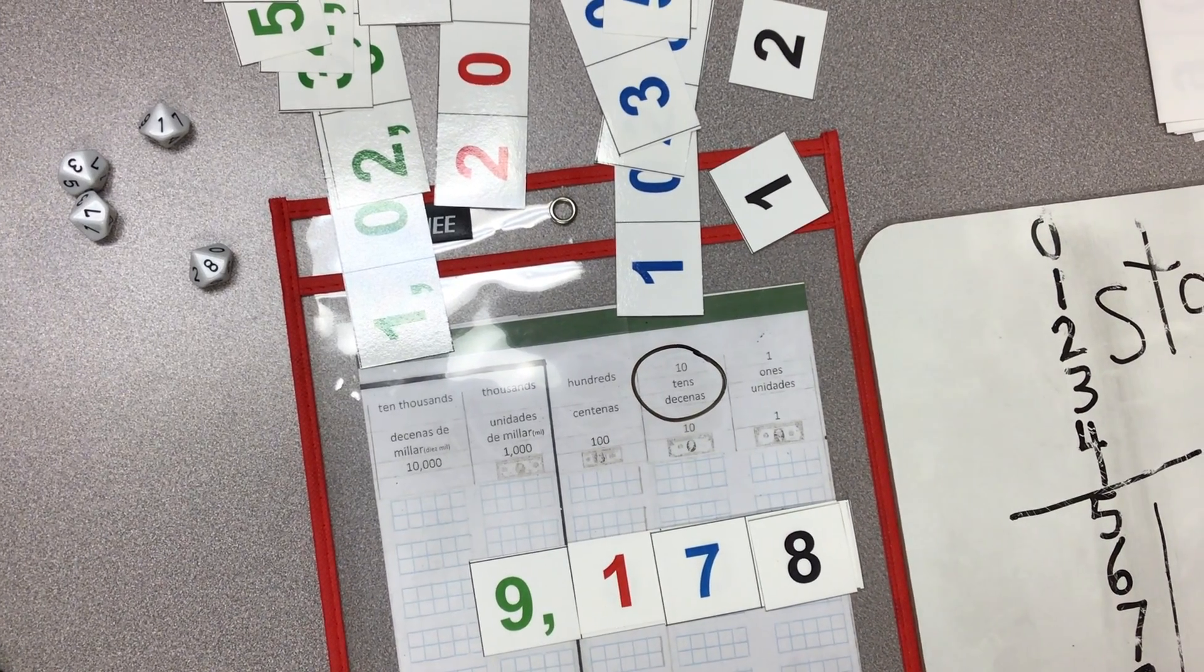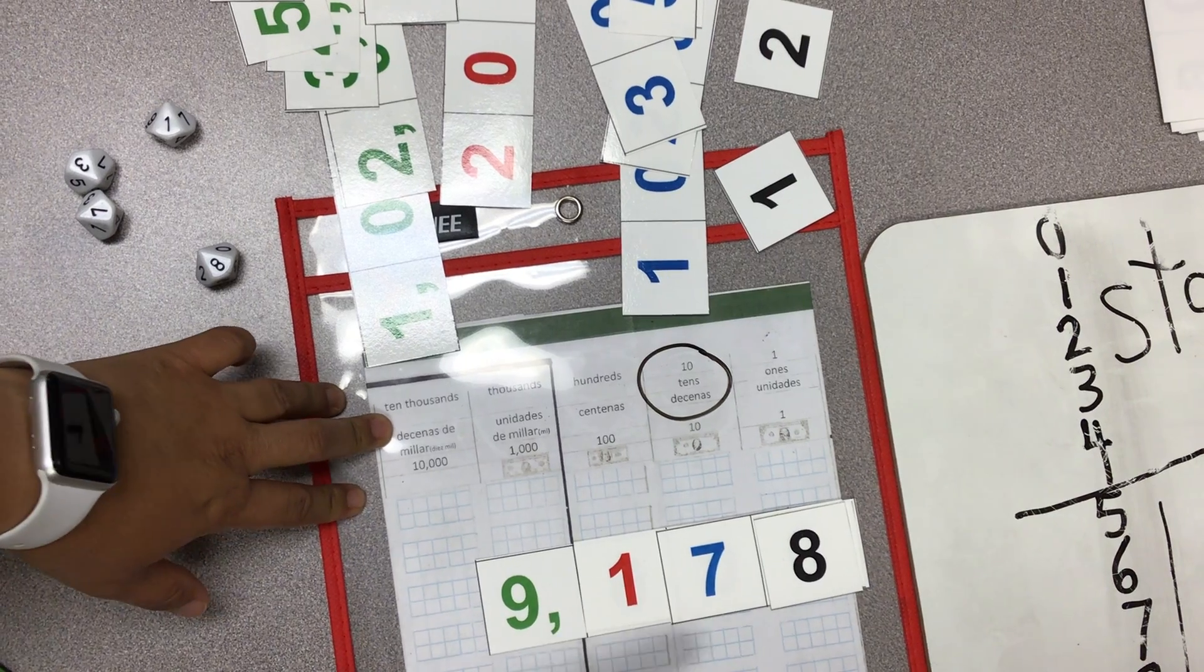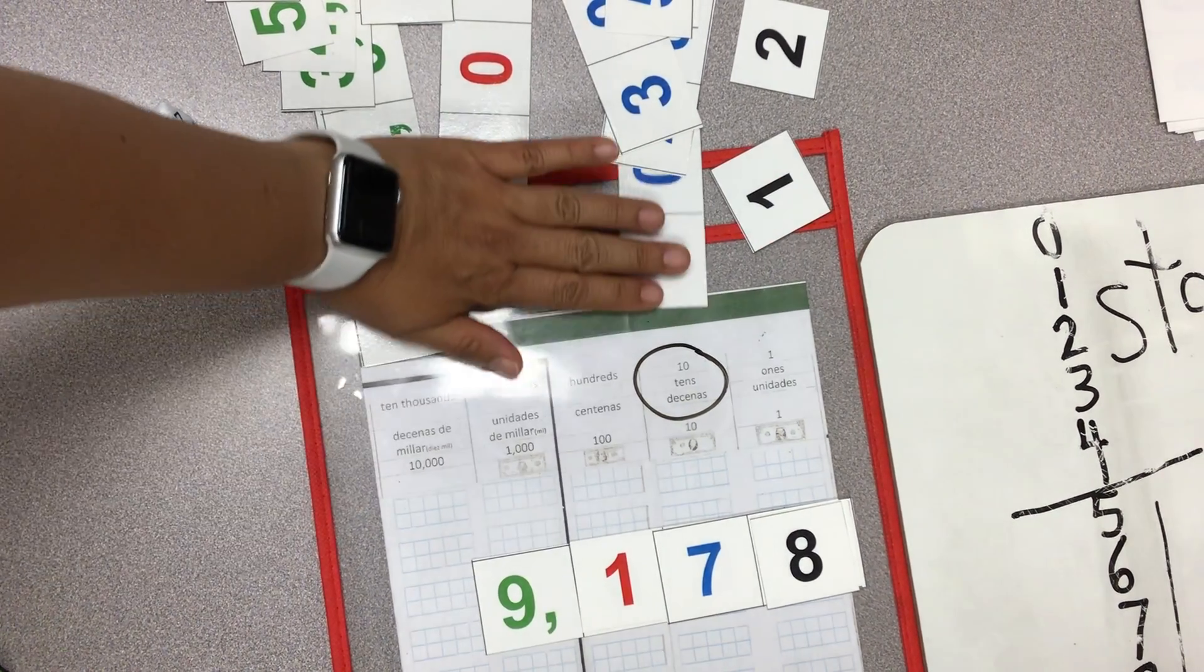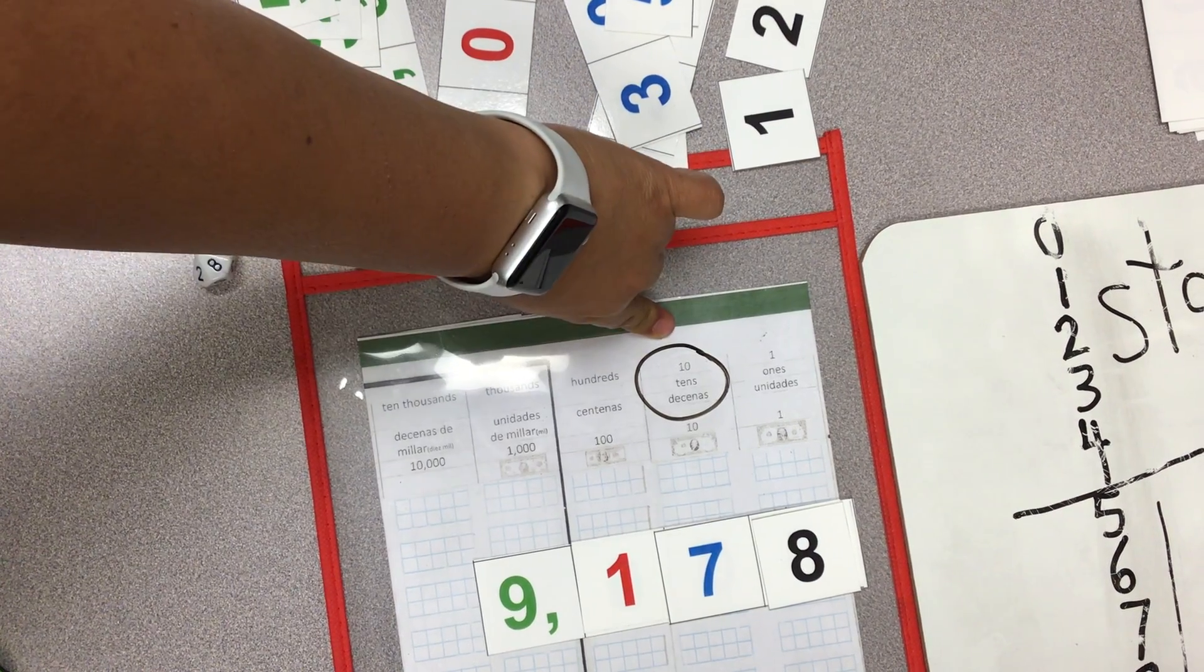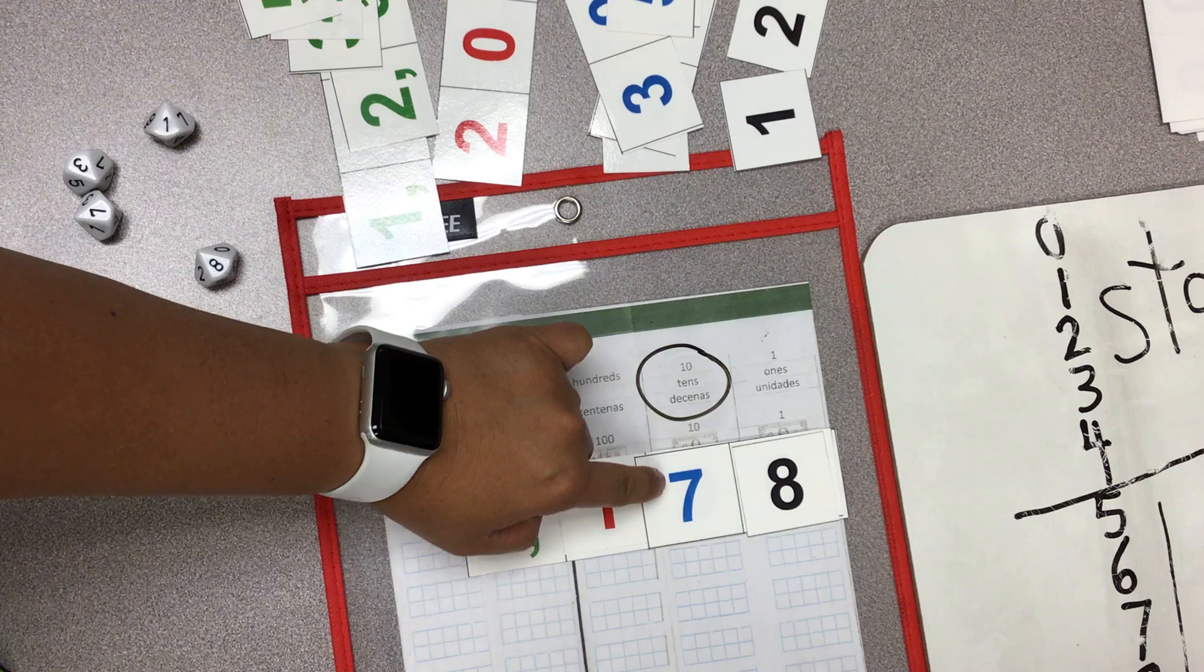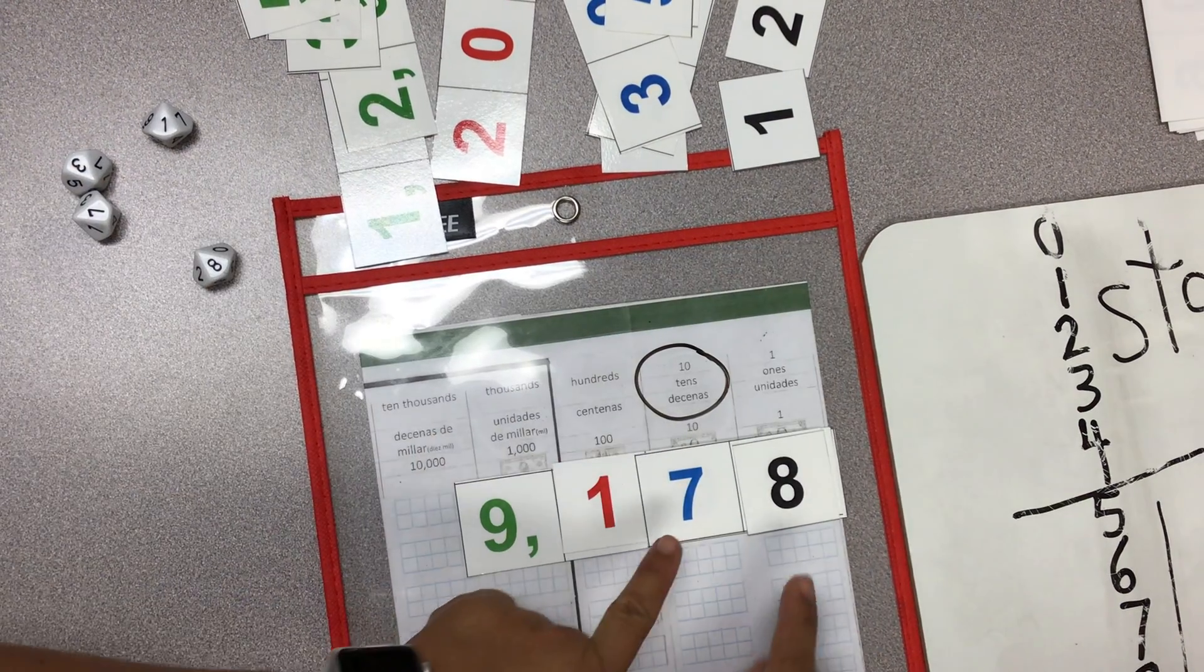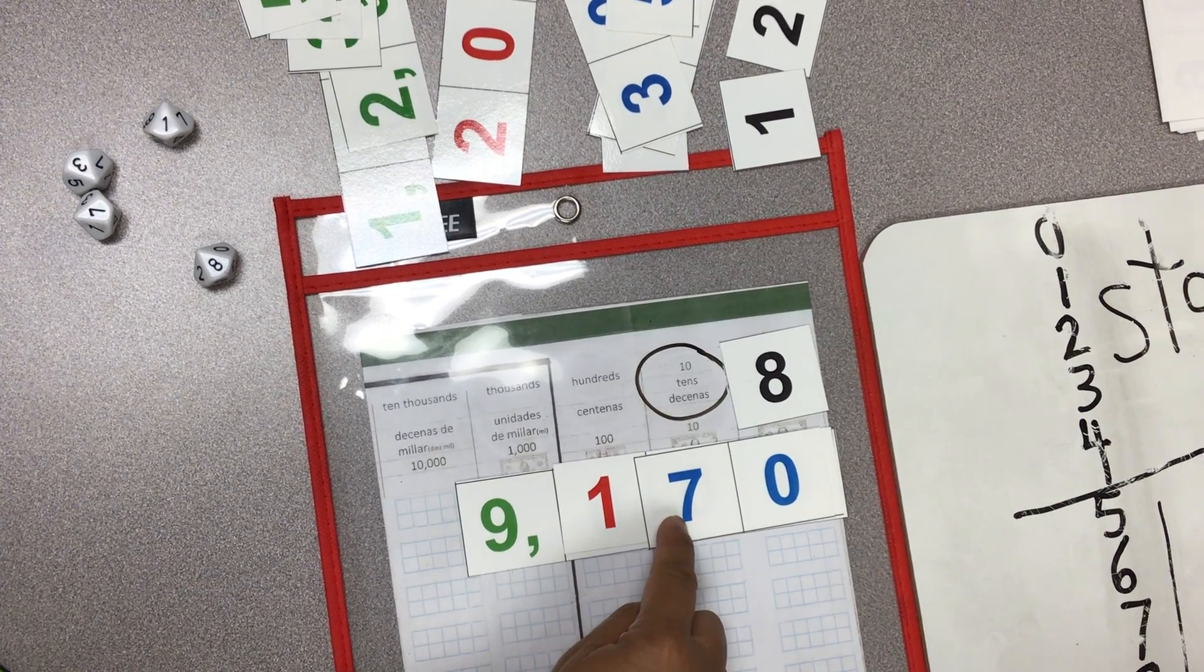So now we have 9,178, and we want to round to the nearest ten, right? So let's look at the tens. How many tens? Let me look at the tens. Here. I have seven tens.